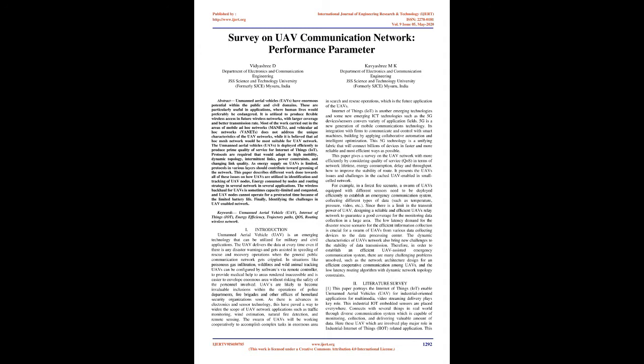Internet of Things (IoT) is another emerging technology, alongside new ICT technologies such as 5G devices and sensors across various application fields. 5G is a new generation of mobile communications technology; its integration enables firms to communicate and control smart machines through collaborative automation and intelligent optimization. This 5G technology connects billions of devices in faster, more reliable, and efficient ways. This paper surveys the UAV network considering quality of service (QoS) in terms of network lifetime, energy consumption, delay, and throughput. It presents UAV issues and challenges in cached UAV-enabled small-cell networks.